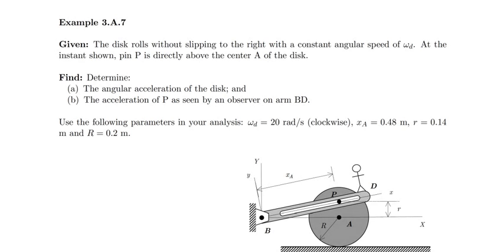Welcome to one of the longer problems of the semester — a classic one. What we have here is a disk rolling without slip to the right at a constant angular speed of omega_d. At the instance shown, pin P is directly above the center A of the disk. Given this information, we're asked to determine the angular acceleration of the disk and the acceleration of point P as seen by an observer on arm BD.